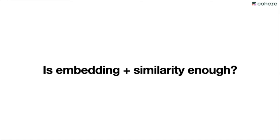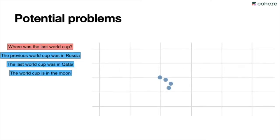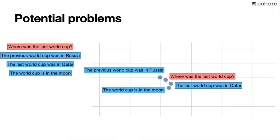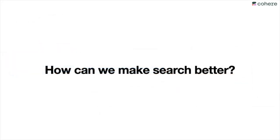Are we done with just embeddings and similarity? It seemed to work pretty well — better than lexical search — but there are potential problems. For example, if the query is 'Where was the last World Cup,' and the answers are 'The last World Cup was in Qatar,' 'The previous World Cup was in Russia,' and 'The World Cup is on the moon,' all of these are similar sentences. Embedding only handles similarity — it doesn't check if the actual answer was given. The closest sentence might be 'The previous World Cup was in Russia,' which is close to the answer but not the answer. So looking for the closest sentence gives something similar to the question, not necessarily the correct answer.